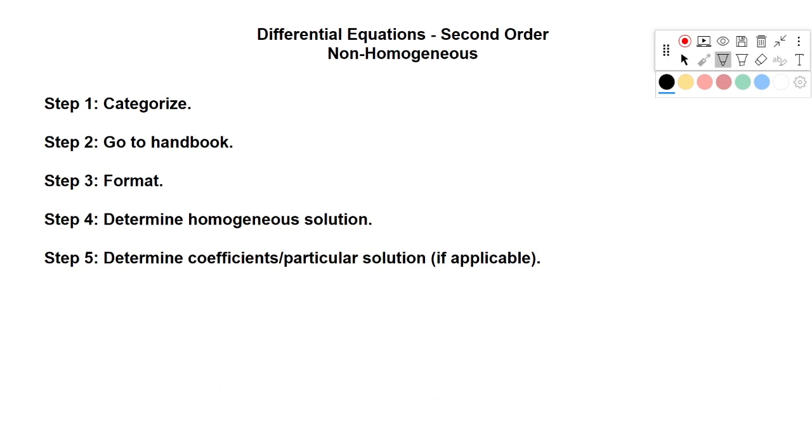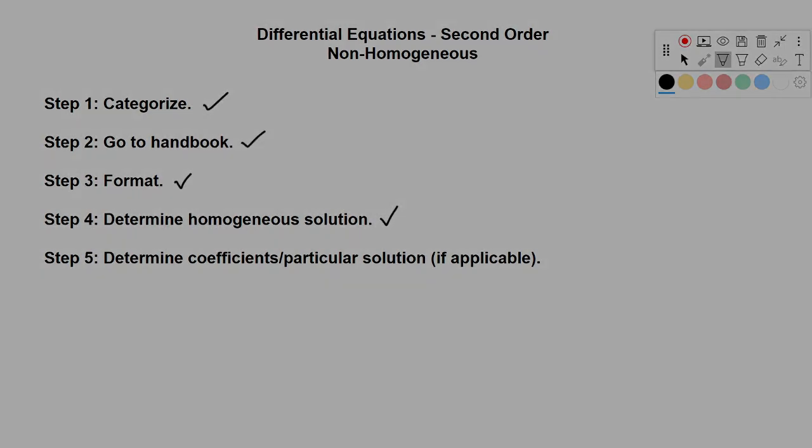So just to review, we followed the same steps we followed with all of our differential equations. We first categorize the differential equation. We then go to our handbook for that categorization. We format it according to the handbook, determine the homogeneous solution. And then the part that's a little different this time, we use the table in the handbook to find the format of the particular solution. We solve for that format. And then if we have initial conditions, we use the full function and or its derivatives with the initial conditions to solve for our coefficients c1 and c2.